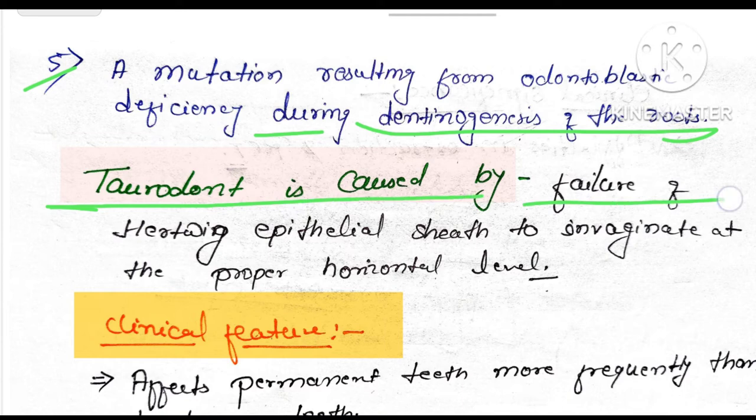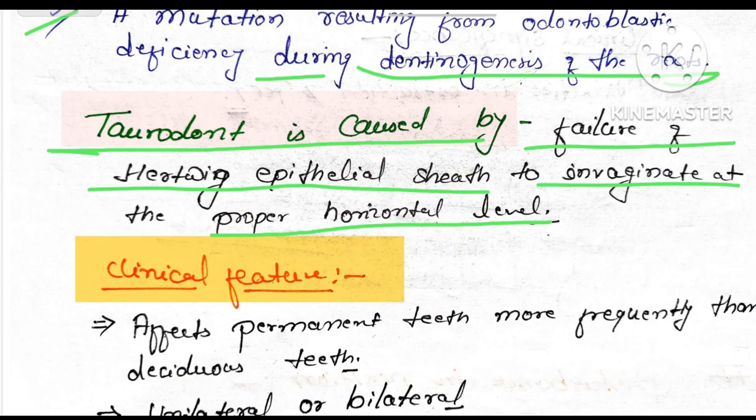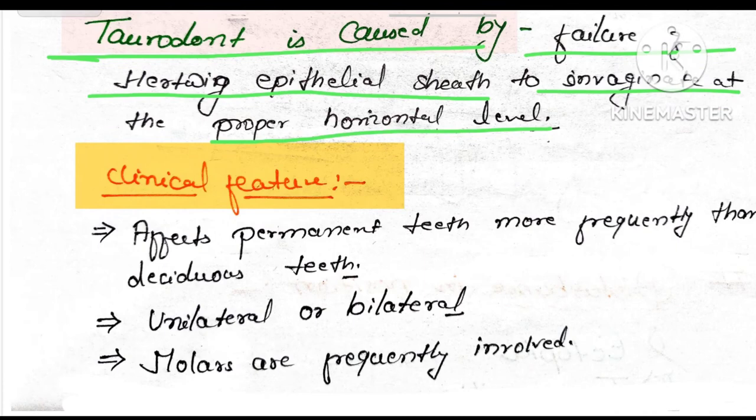Taurodontism is caused by failure of Hertwig's epithelial sheath to invaginate at the proper horizontal level. When the epithelial sheath fails to invaginate at the proper horizontal level, taurodontism occurs.